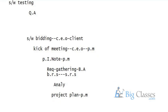Once planning is completed, the next stage is designing. At this stage, architecture and technical people concentrate on designing the application. Based on the requirements, they design the application in two types: High Level Design (HLD) and Low Level Design (LLD). The outlook of the project is called high level design, and the inner look of the project is called low level design.